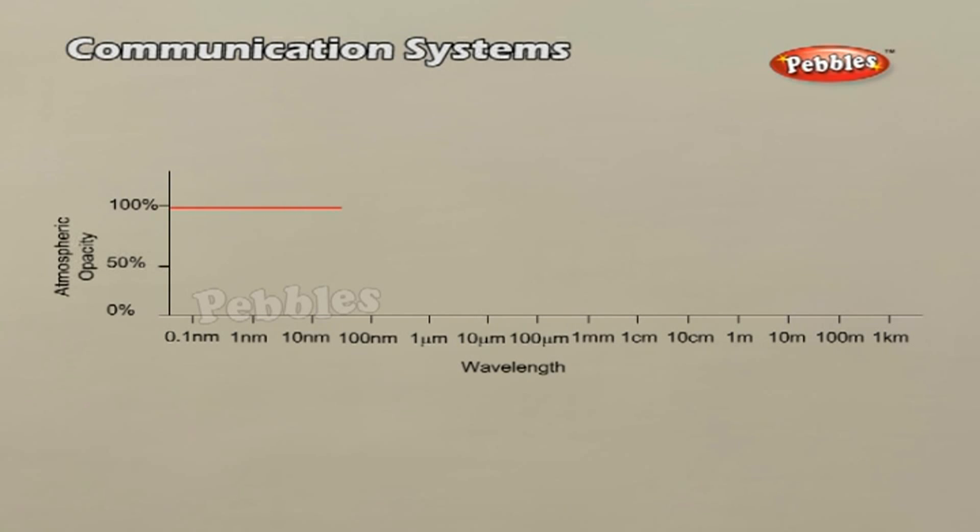Skywave is the propagation of electromagnetic waves bent or refracted back to the Earth's surface by the ionosphere. Rough plot of Earth's atmosphere transmittance to various wavelengths of electromagnetic radiation including radio waves are shown above.